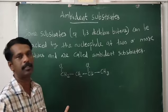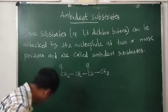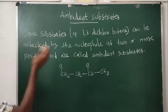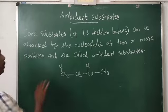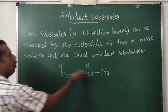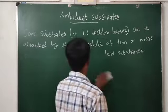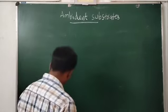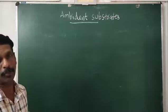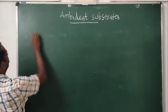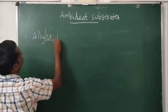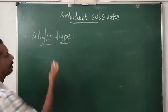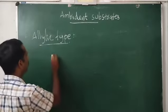This type of substrate molecule is called an ambient substrate, because there are more positions for attack by the nucleophile. Some substrates can be attacked by the nucleophile at two or more positions and are called ambient substrates. One example is 1,3-dichlorobutane. Other compounds that can act as ambient substrates include allylic-type compounds.